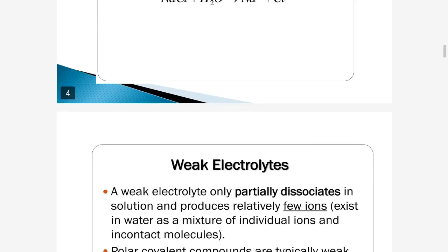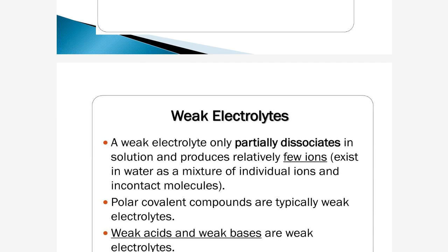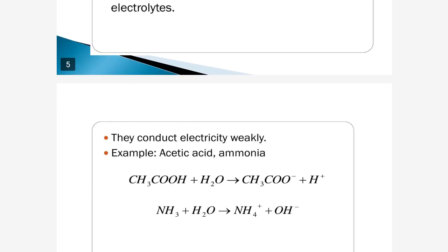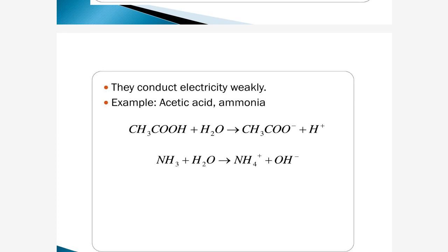Now next, weak electrolytes. A weak electrolyte is only partially dissociated in a solution and produces relatively few ions. That means it exists in water as a mixture of individual ions and intact molecules. Polar covalent compounds are typically weak electrolytes. Weak acids and weak bases are examples of weak electrolytes. They conduct electricity weakly. Examples include acetic acid and ammonia, which give H⁺ and OH⁻ ions in solution.